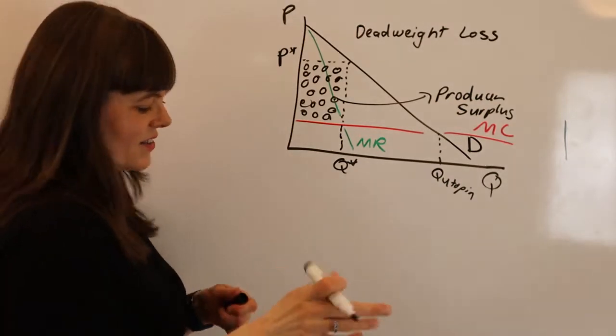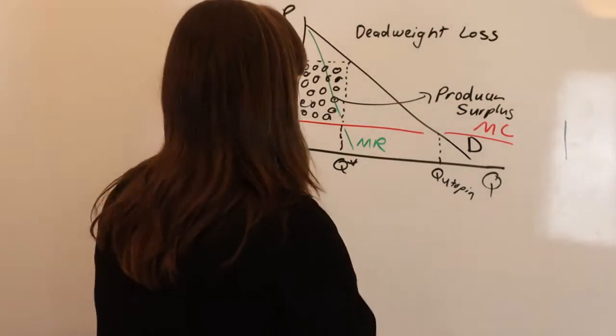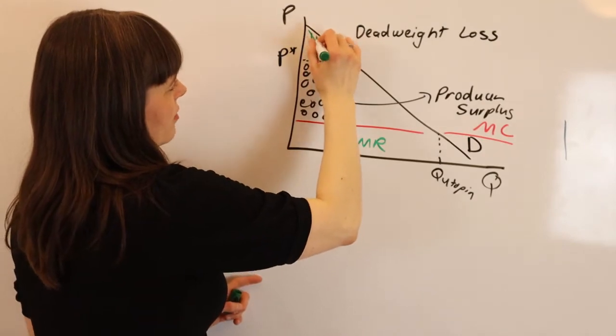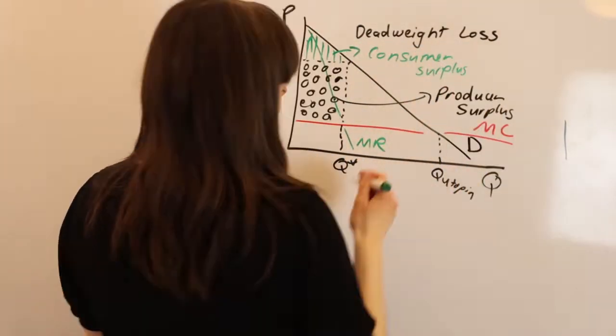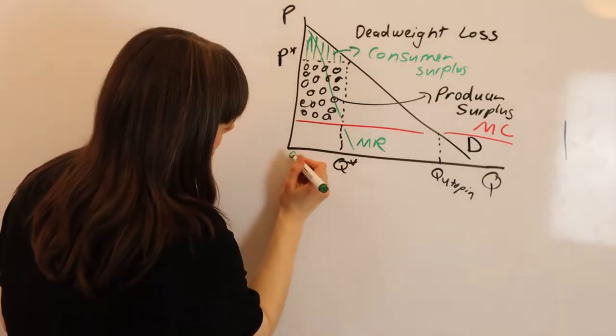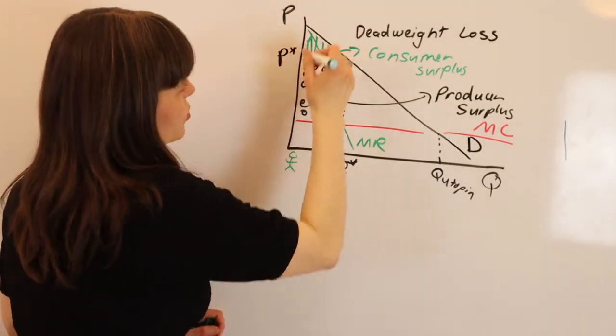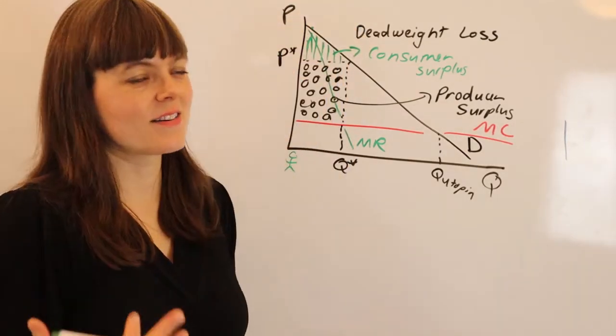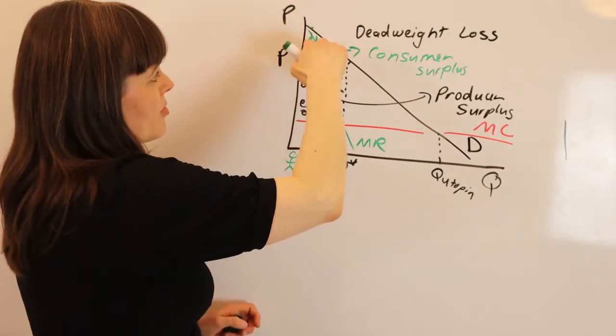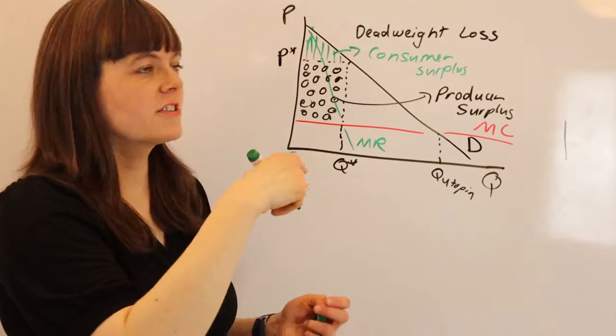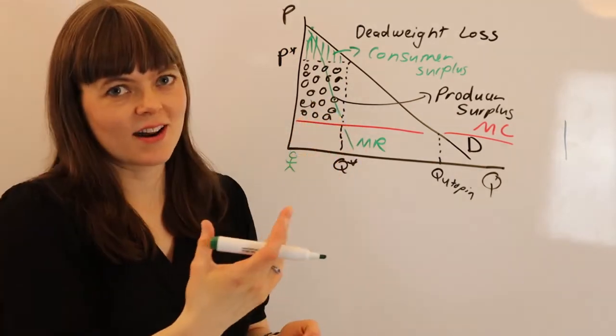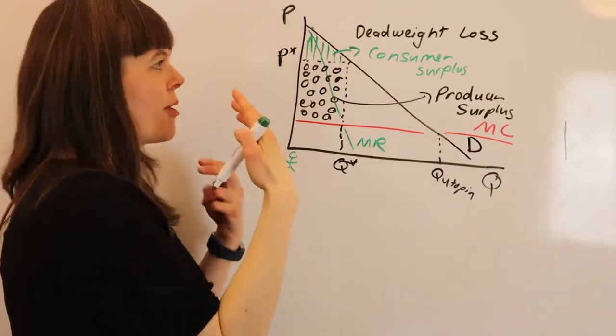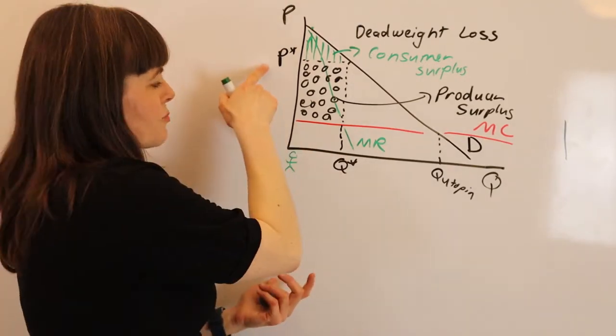The consumer surplus is represented by this triangle here. We can think of that because this customer on the demand curve is willing to pay $599 for the product, but they're being charged $300. That means there's a $299 surplus that this particular person gets from purchasing the product at this price.